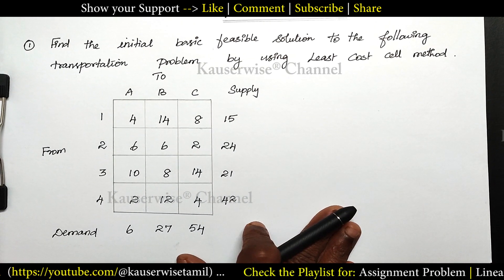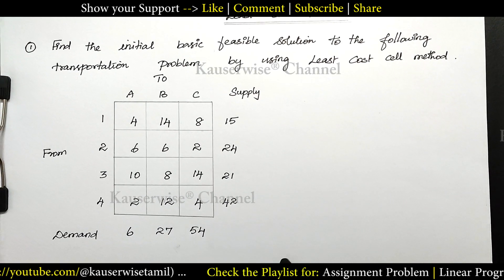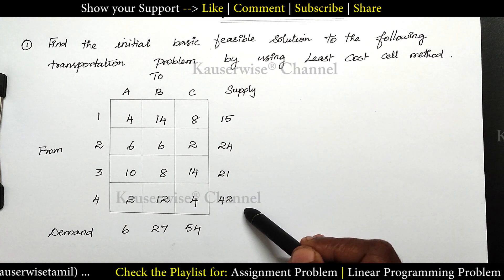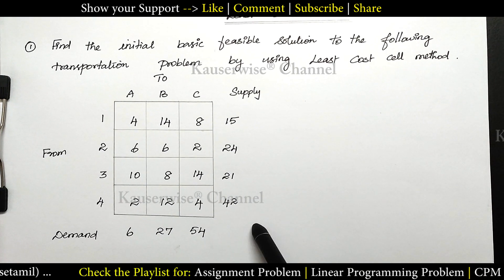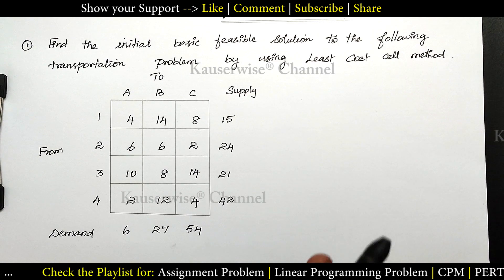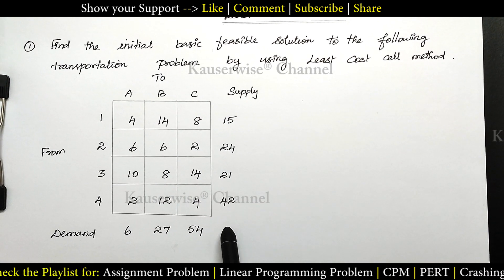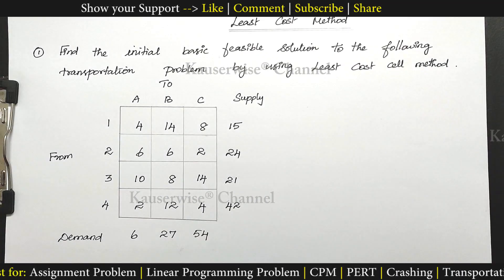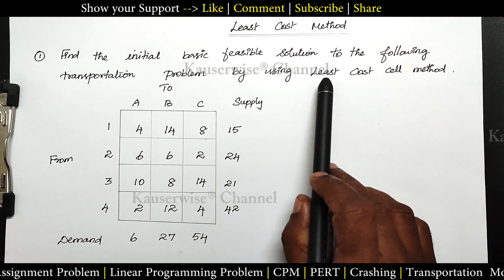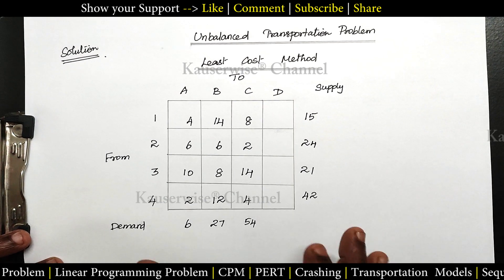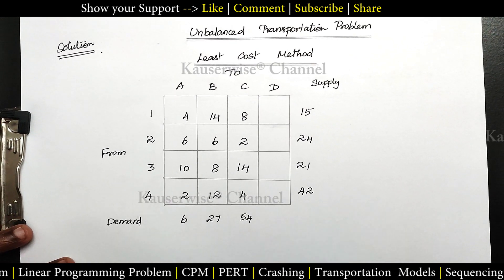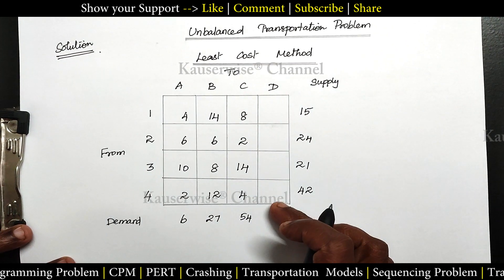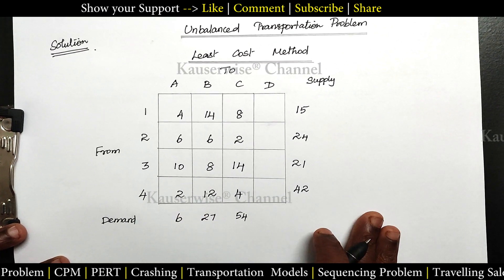So this problem is unbalanced. We need to add either a dummy row or dummy column. Here supply is more than demand — the difference is 15. So we need to add one dummy column in order to convert this unbalanced problem into a balanced one. Then we can solve the problem by using the least cost cell method. I have taken the cost matrix and the first step is to add a dummy column.